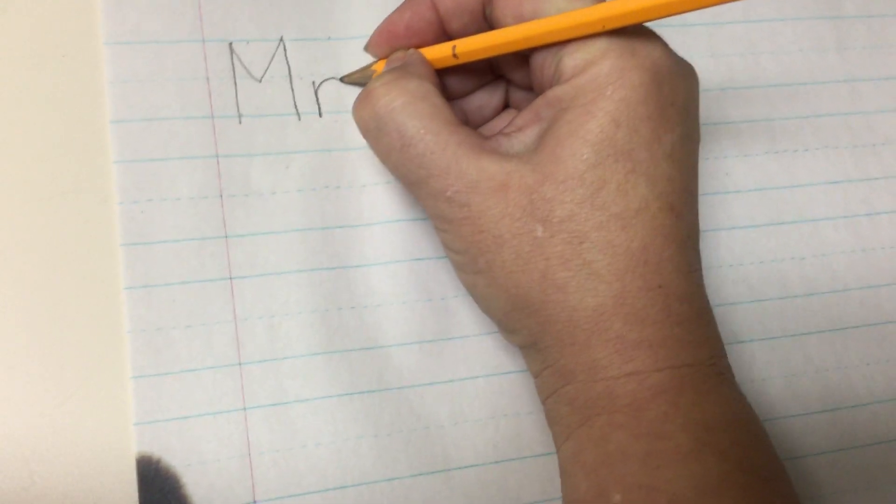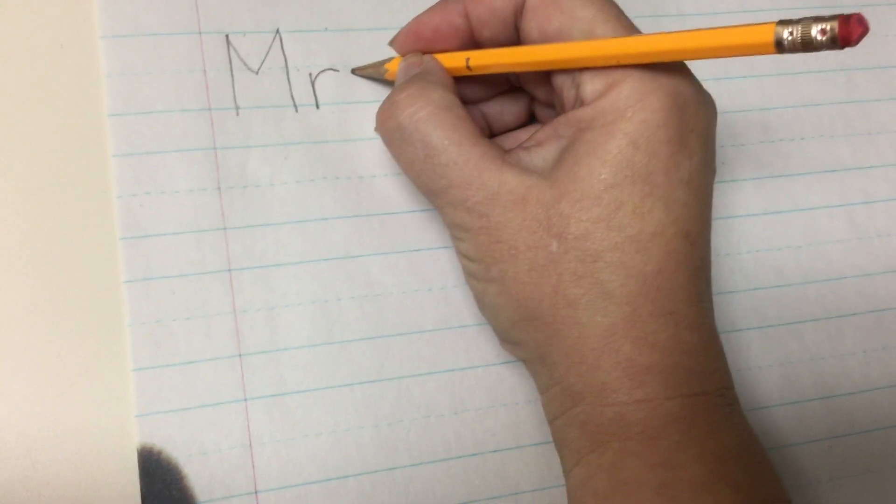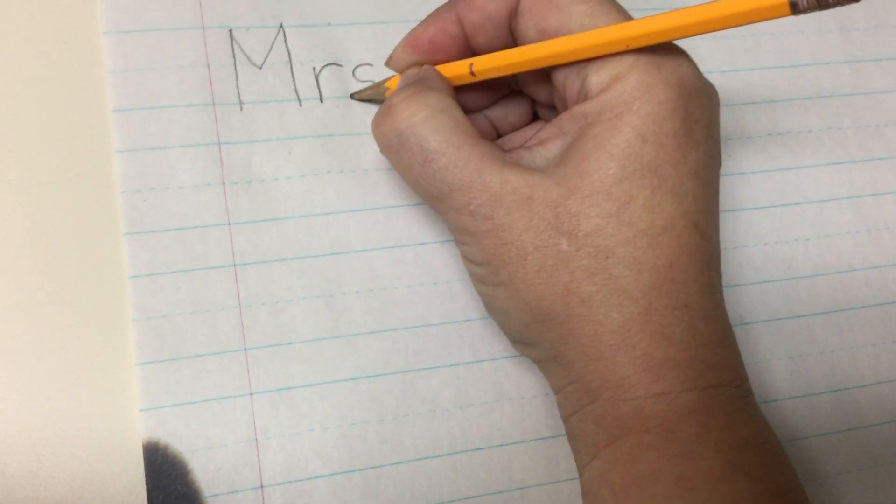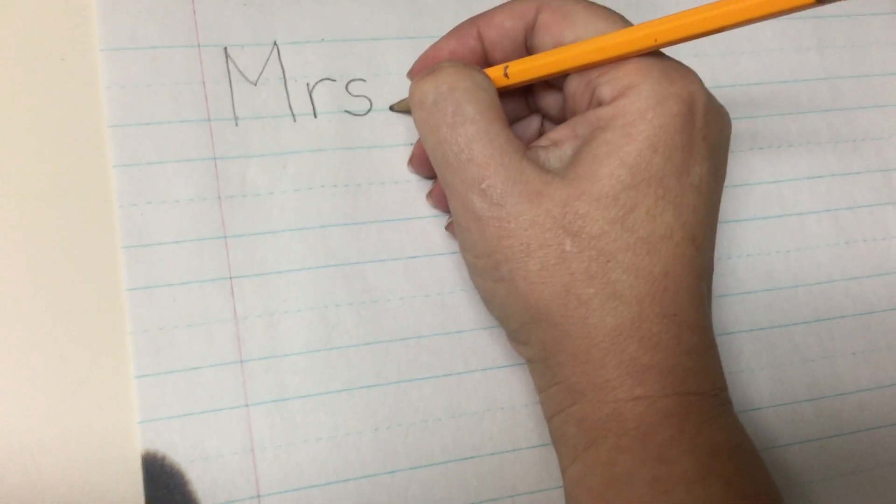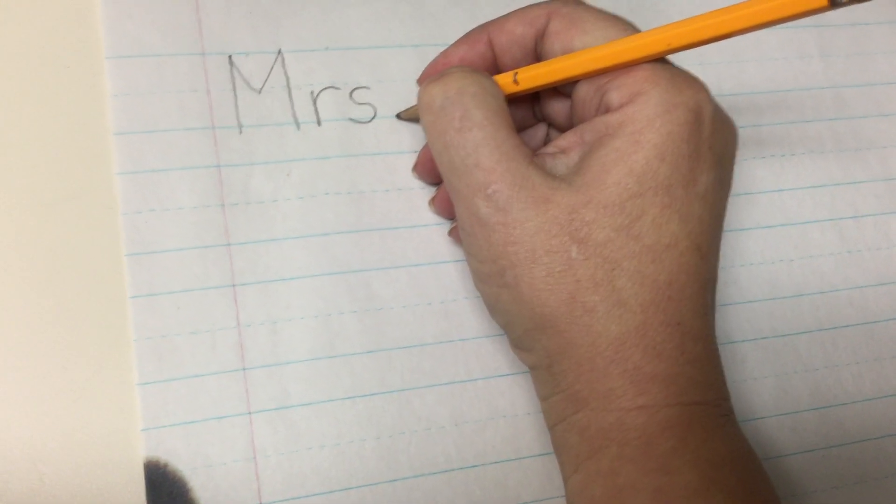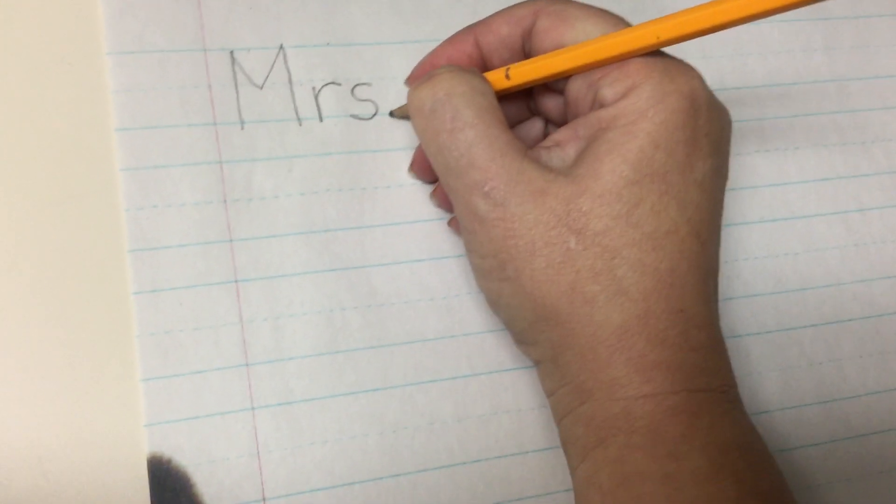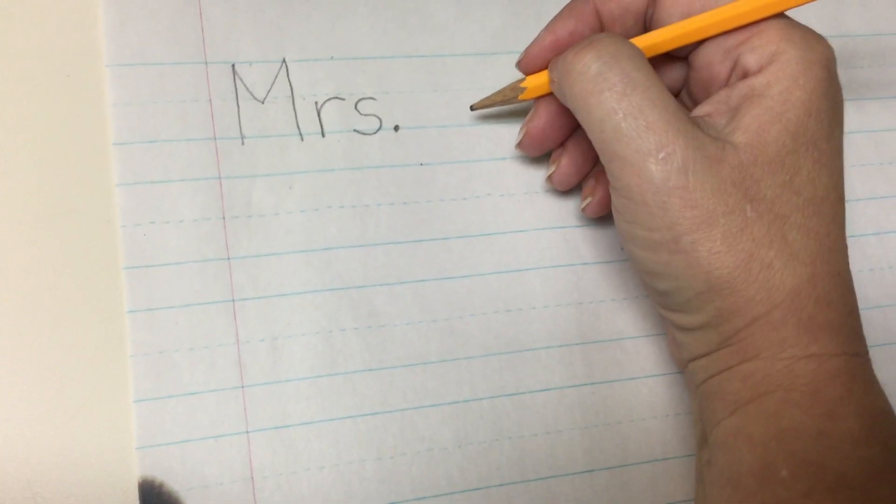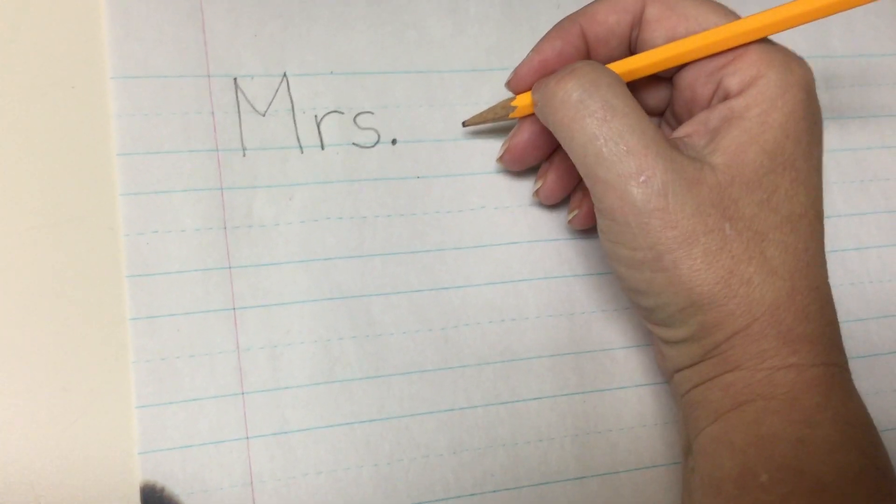Okay, next I'm doing my letter R. And I'm using that middle line. Little lowercase s. Curve and curve. So in teachers' names and grown-ups' names, if you say Mr. or Mrs., there's a dot.